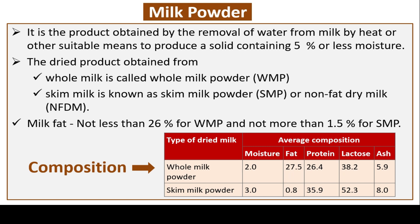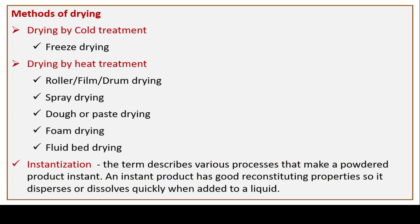Composition of whole milk powder: moisture 2%, fat 27.5%, protein 26.4%, lactose 38.2%, ash 5.9%. Skim milk powder: moisture 3%, fat 0.8%, protein 35.9%, lactose 52.3%, ash 8%. Methods of drying: by cold treatment — freeze drying; by heat treatment — roller/film/drum drying, spray drying, paste drying, foam drying, and fluid bed drying.